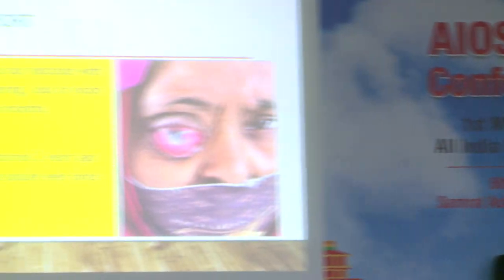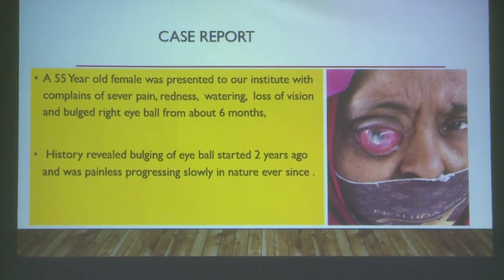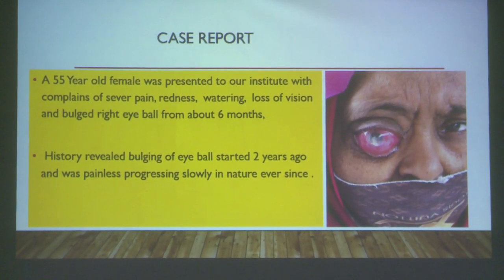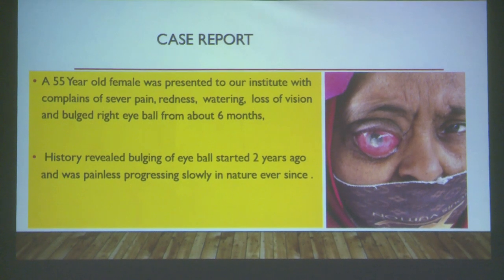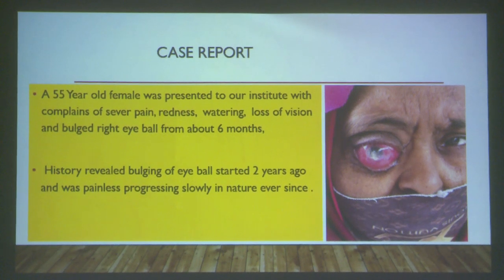Good evening everyone. I am presenting a rare case of a large intraconal schwannoma. Schwannoma is a slow-growing benign peripheral nerve sheath tumor originating from Schwann cells. A 45-year-old female presented with complaints of severe pain, redness, watering, loss of vision and bulging of the right eyeball for about six months. History revealed the bulging had started two years ago, painless and progressive in nature. On examination, there was severe proptosis of the right eye with conjunctival chemosis, exposure keratopathy, corneal ulcer, and pupils mid-dilated — possibly due to pharmacological cause or compressive lesion. Visual acuity was only perception of light with inaccurate projection.